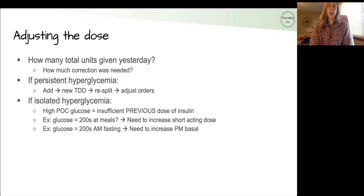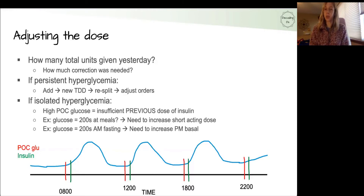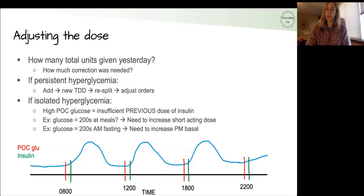If they have a more isolated hyperglycemia, you want to be more specific about which orders you adjust. The key thing to remember is that a high glucose level at a single time point is indicative of the previous insulin dose. For example, if they're having high glucose measurements at meals, this tells us we need to increase their short-acting dose at the previous time interval. On the other hand, if they're having high glucose levels in the morning when fasting, we need to increase their basal dose given at night. In this graph, the red lines are the time points at which we measure point-of-care glucose, and the green lines are the time points at which we give insulin — typically four times a day: morning, lunchtime, dinnertime, and bedtime.